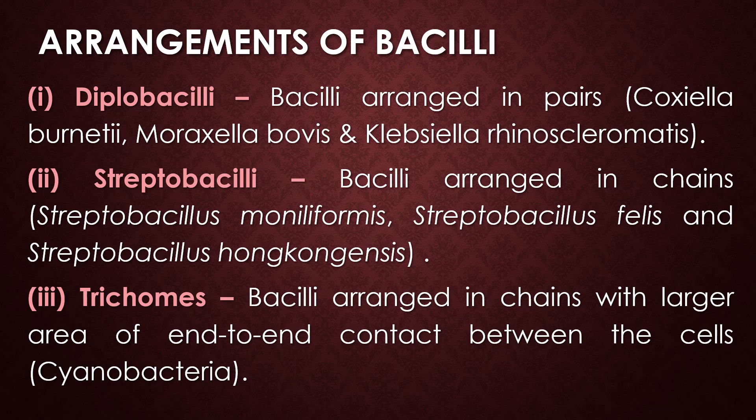The first type of arrangement is diplobacilli — bacilli arranged in pairs. The second type of arrangement is streptobacilli — bacilli arranged in the form of chains. Some examples for streptobacilli are Streptobacillus moniliformis, Streptobacillus phagocytophilum, and Streptobacillus homogensis.